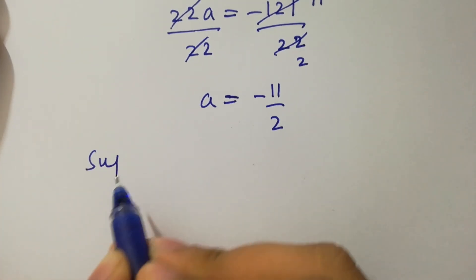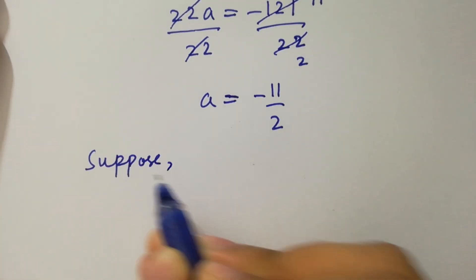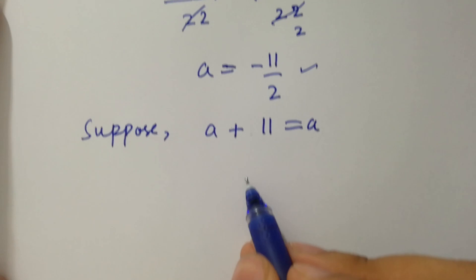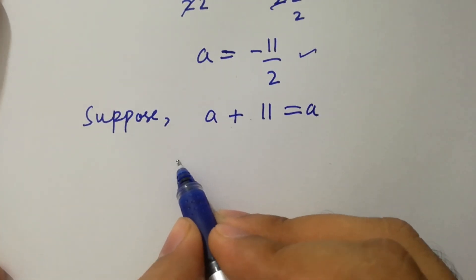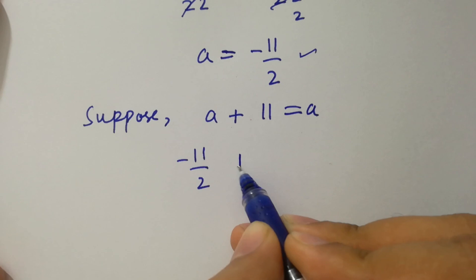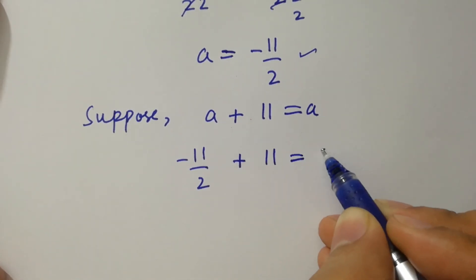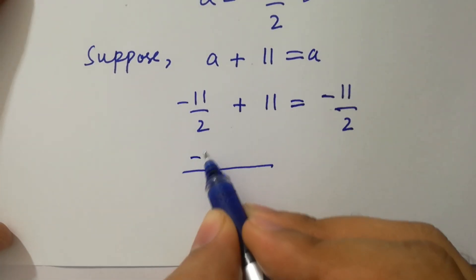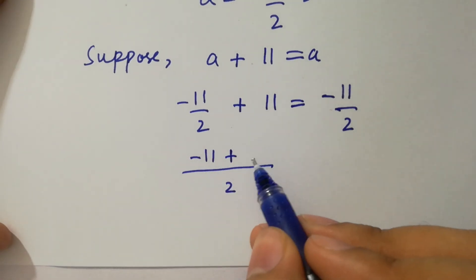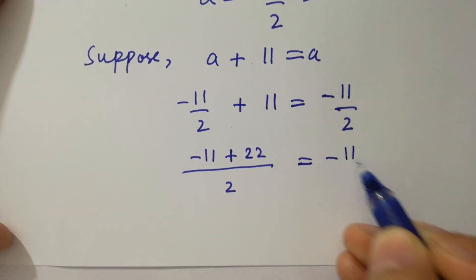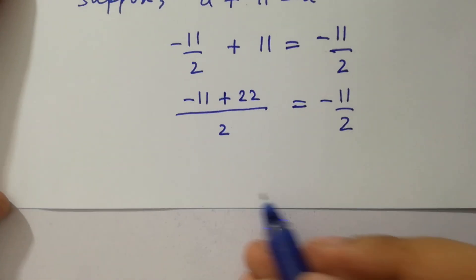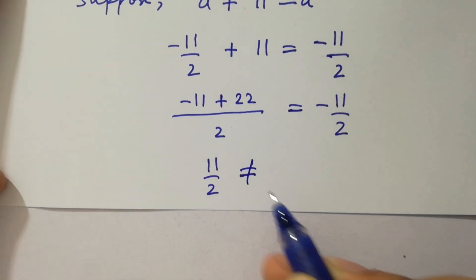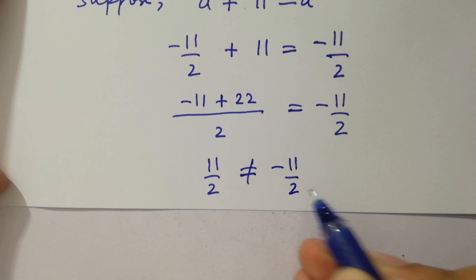Suppose a plus 11 equal to a. Put the value of a: minus 11 over 2 plus 11 equal to minus 11 over 2. Take LCM: minus 11 plus 11 times 2 is 22, equal to minus 11 over 2. Next we have 22 minus 11 will be 11 over 2, which does not equal to minus 11 over 2. But why?